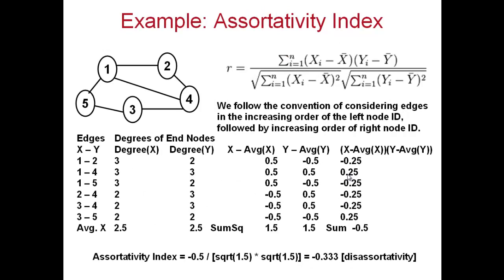Let us do the calculations. Given a graph, the first step is to write down all the edges. You could write the edges in any order, but for uniformity we will follow this approach — since these are undirected edges, we write the lower ID vertex first followed by the higher ID vertex. So there is an edge 1-2, written as 1,2. Then edge 1-4, written as 1,4. Then 1,5. So you are done with vertex 1.